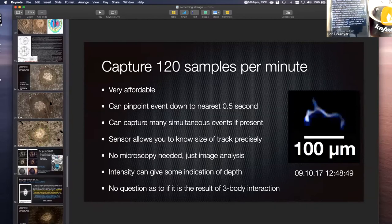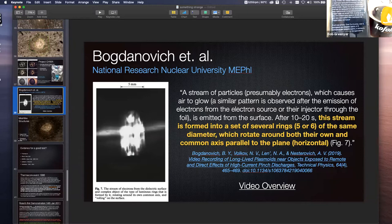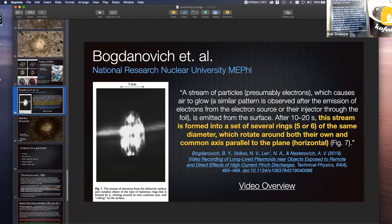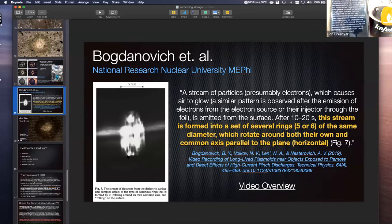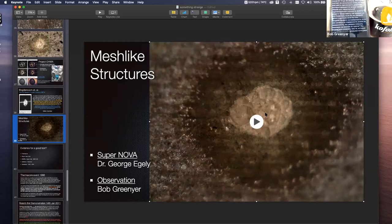And then that brings me to Bogdanovich. So we're back in Russia here now. You know this work. And it's recent work. And he's saying here a stream of particles, presumably electrons, which causes air to blow. After 10 to 20 seconds, this stream is formed into a set of several rings, five or six of the same diameter, which rotates around both their own common axis parallel to the plane horizontal. If you can imagine this structure rotating around, would you see something like this if it impacted a surface? If this was rolling across the surface influencing the surface, would we see a track that looks like many of the tracks we see?